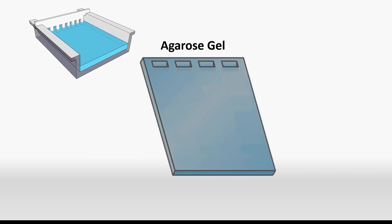A comb is added at the top and the solution is allowed to solidify. Once it has solidified, the comb is removed and the agarose gel is ready. It looks like a thin slab of gelatin with wells along the top or pockets created by the comb. This is where the sample will be added.